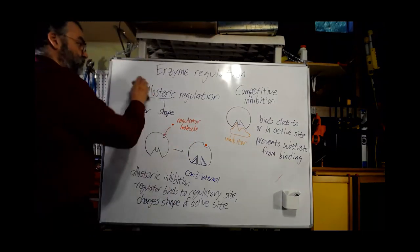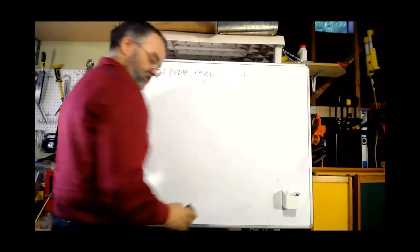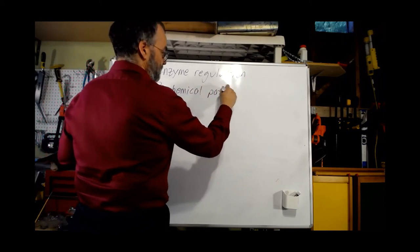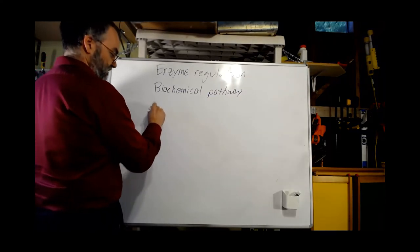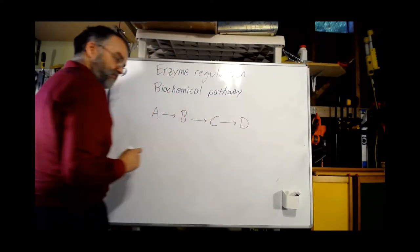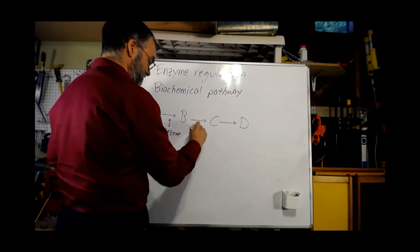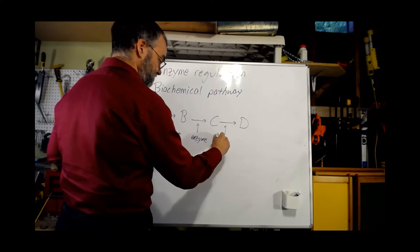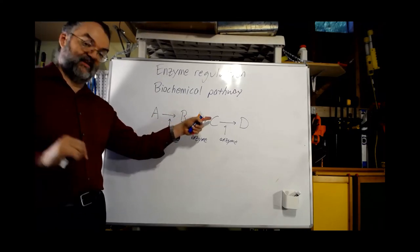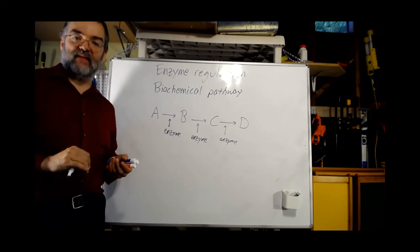So those are the two ways to regulate enzymes: allosteric regulation, which is almost always reversible, and competitive inhibition, which may be reversible or not. This leads to our last topic — the idea of a biochemical pathway. If we have molecule A that can be made into B, then B into C, then C into D, and I want to make D starting from A, each of these steps probably has its own enzyme. With all three enzymes active, A gets turned into B, B into C, and C into D.